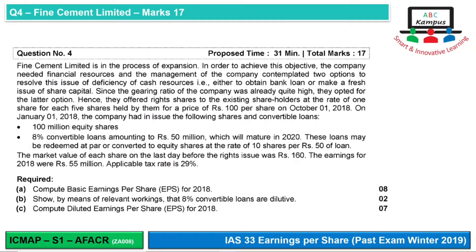Welcome to ABC Campus. Today we are going to talk about advanced financial accounting and corporate reporting. Question 33 covers earnings per share from the past exam, Winter 2019 — it is question number 4, Find Cement Limited. It is 17 marks and there are 3 requirements.